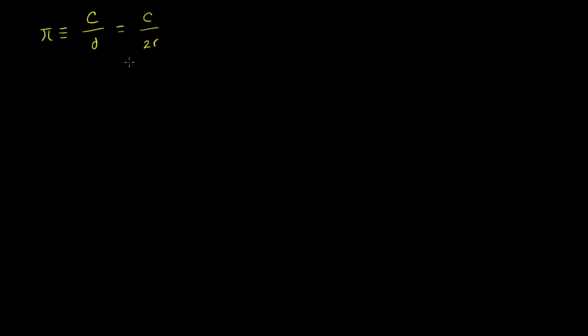From that, we get all these interesting formulas that you get in geometry class. If you have the radius and you want to calculate the circumference, multiply both sides of this definition by 2 times the radius, and you get 2 times the radius times pi is equal to the circumference.